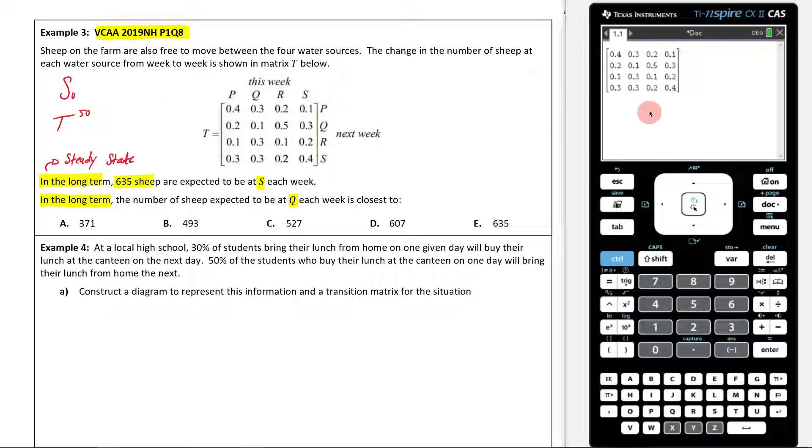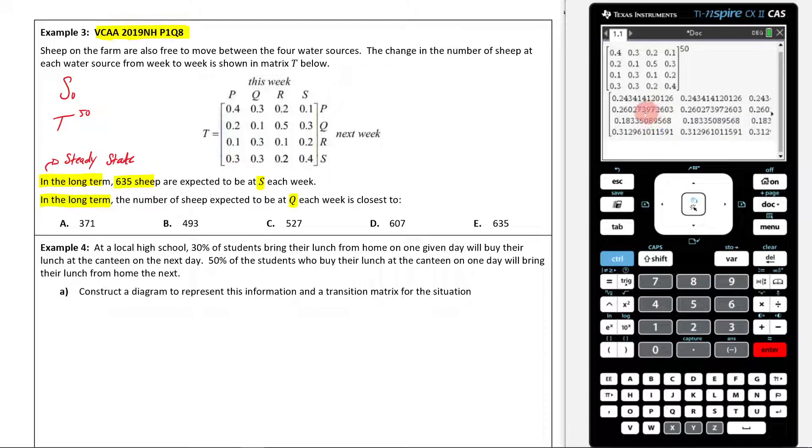I've already typed in my transition matrix here. I'm going to raise it to the power of 50. Let's see what happens. What we need to take note of here is the fact that this first row is going to correspond to all the sheep at P.